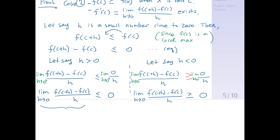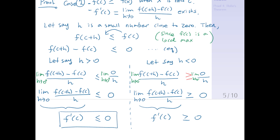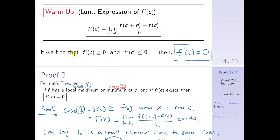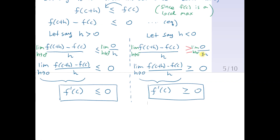Notice that this limit expression is f'(c), which means f'(c) is less than or equal to 0 on one side. And this other expression is also f'(c), which is greater than or equal to 0. Let's put boxes around these and refer back to our warm-up: if f'(c) is greater than or equal to 0 and f'(c) is less than or equal to 0 at the same time, then f'(c) must equal 0. So altogether, f'(c) = 0, which is exactly what we wanted to prove.